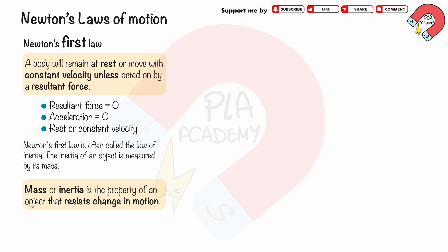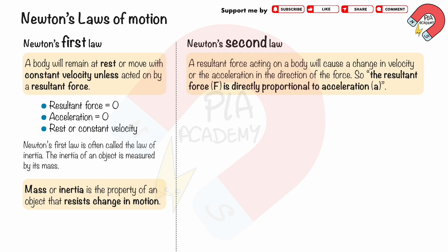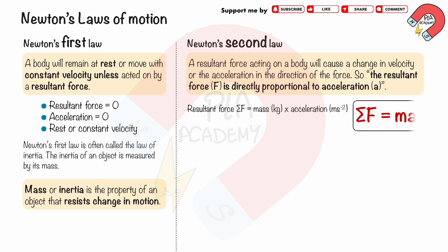Newton's Second Law of Motion states that a resultant force acting on a body will cause a change in velocity, or acceleration, in the direction of the force. The resultant force F is directly proportional to acceleration a. If the resultant force is not zero, the object will accelerate or decelerate. The formula is F = ma, or ΣF = ma. The resultant force is the vector sum of all the forces on an object; Σ is the symbol for sum of, but you'll often see resultant force written as just F.